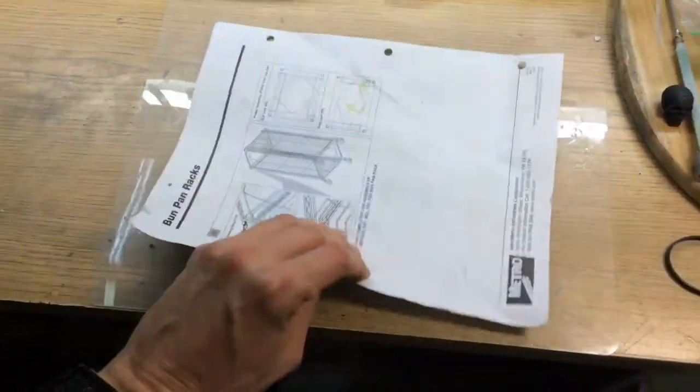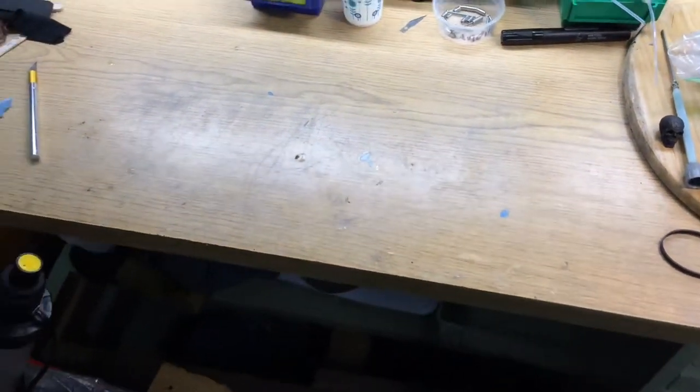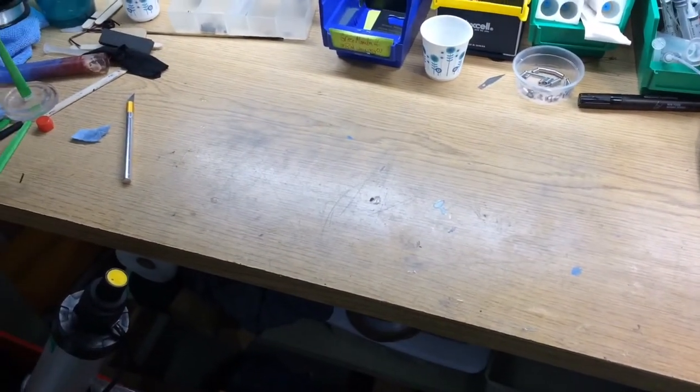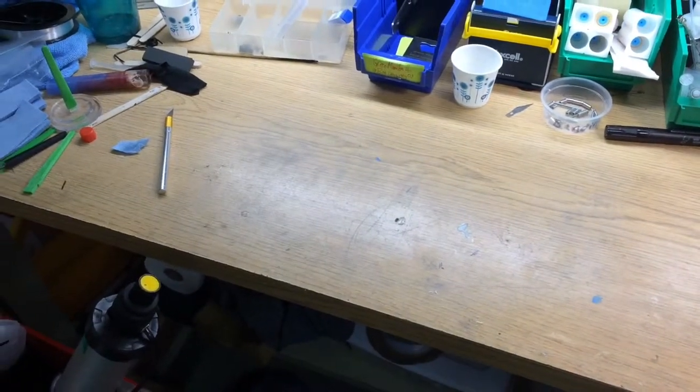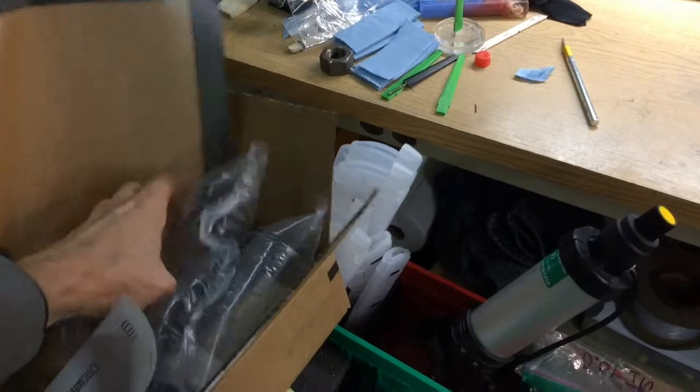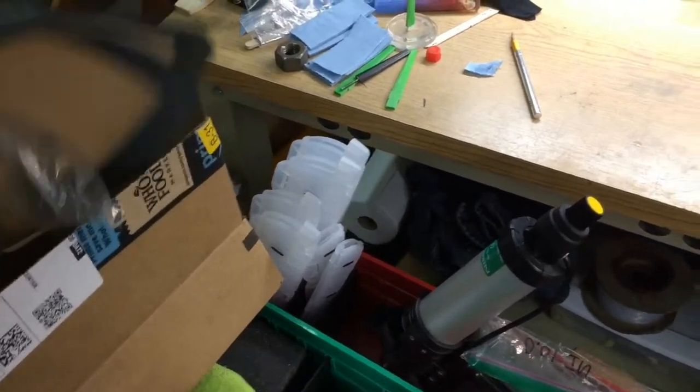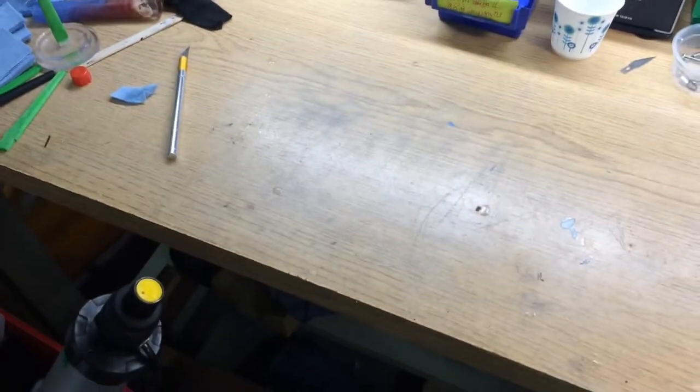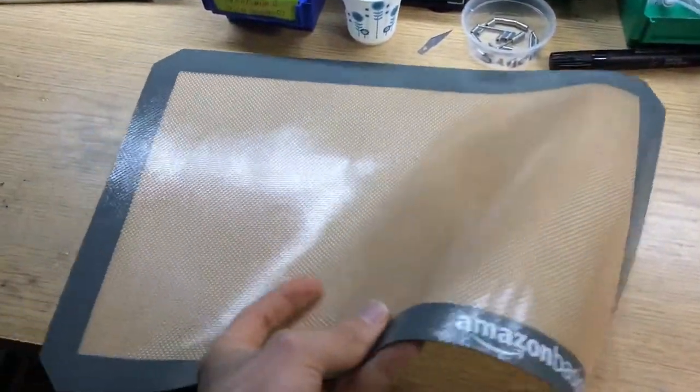So I went to my local Ace Hardware to support local stores, trying to find some silicone mats, like baking mats, because they're really good when you're working with epoxies or glues since stuff doesn't stick to them. But they didn't have any.